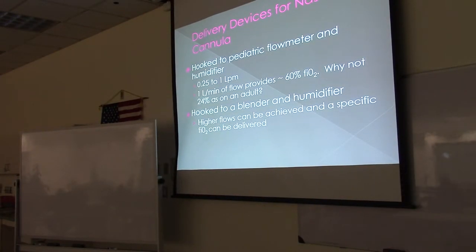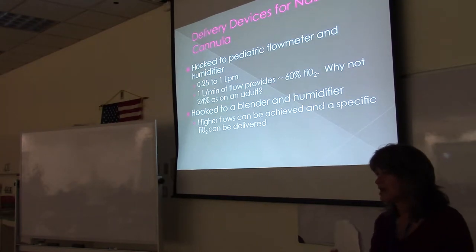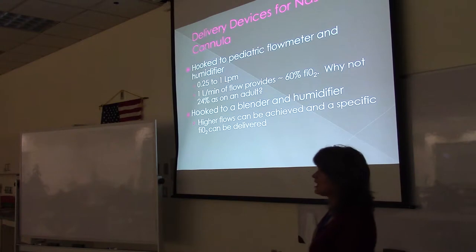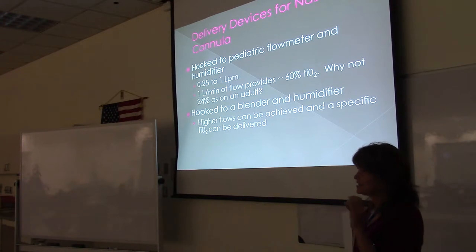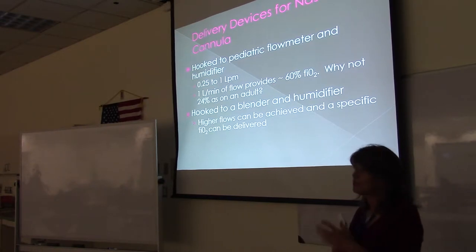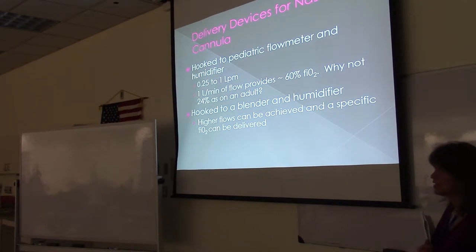Next we talk about devices for delivering oxygen via nasal cannula. The first option is hooking a nasal cannula to a pediatric flow meter and humidifier — this is typically done when neonates go home on oxygen, in the home care setting. They might need a quarter or even an eighth of a liter of oxygen via nasal cannula to keep their O2 stats in range until their lungs develop. Once their lungs develop, they don't need the oxygen. If going home on oxygen, it would be a nasal cannula and an oxygen concentrator.